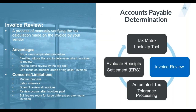The next step is an invoice review process — manually verifying the tax charged on an invoice by your vendor. It's not very complicated, it's flexible, and allows you to determine which invoices to review. It inserts some review by the tax department, so the tax department is taking control and analyzing invoices that have been paid. You can focus on problem areas or big dollar areas. It's a step in the right direction, taking some control over what's happening, but not automation.